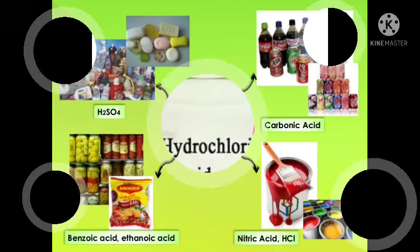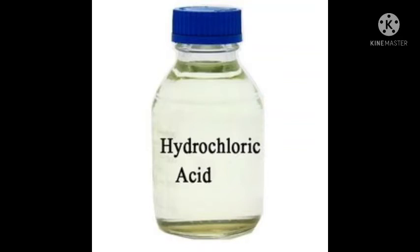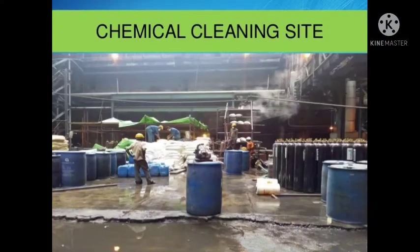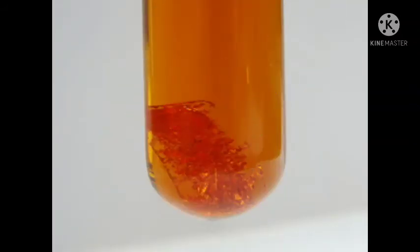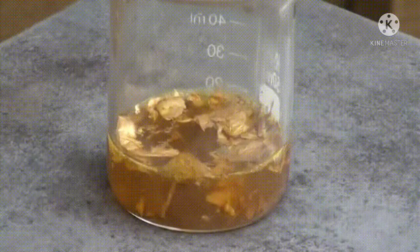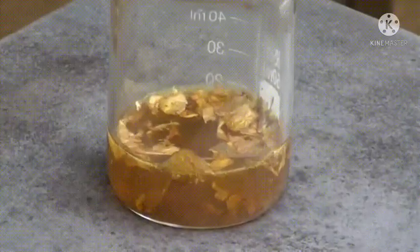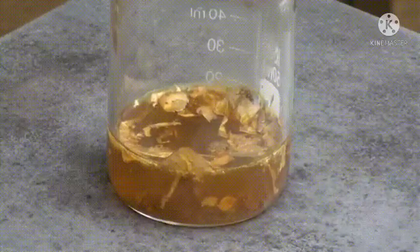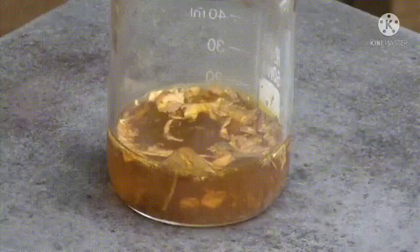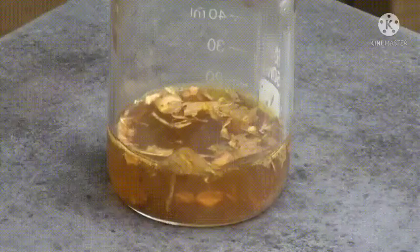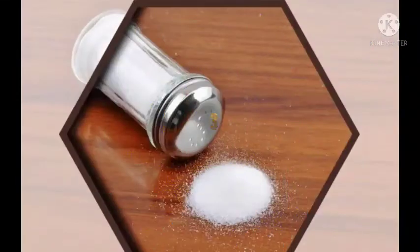Hydrochloric acid — let us see the uses. First, it acts as a descaling agent for boilers, as it removes the deposits inside the boilers. Second, it is used for making aqua regia, that is three parts HCl mixed with one part nitric acid, which is used to dissolve precious metals such as gold and platinum.